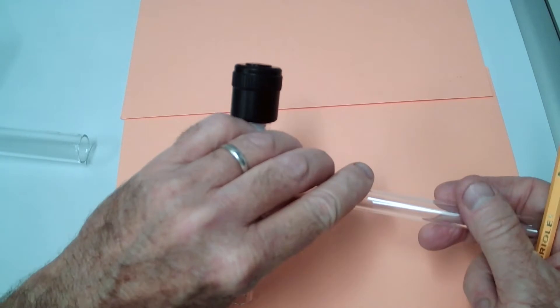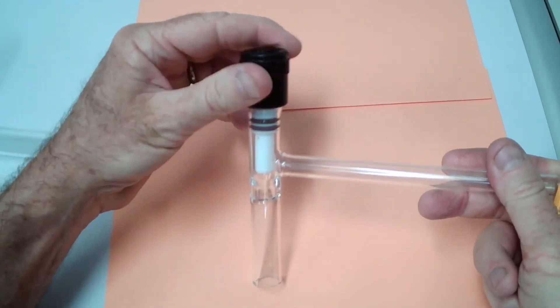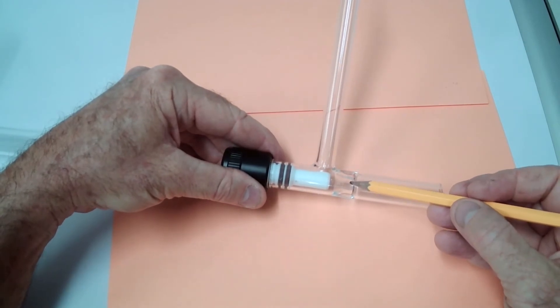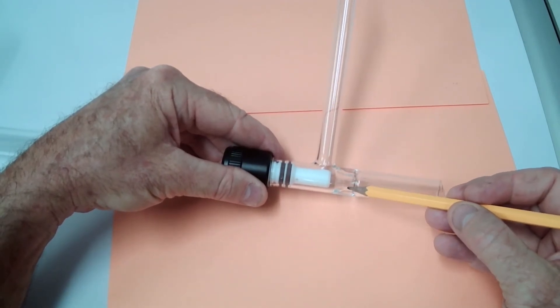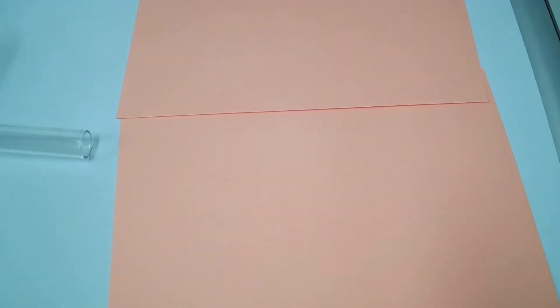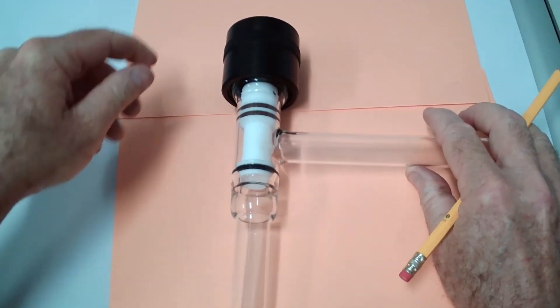The next size up in this example, this is a zero to eight. Eight refers to the valve seat opening here. They make a zero to twelve all the way up to a zero to twenty.